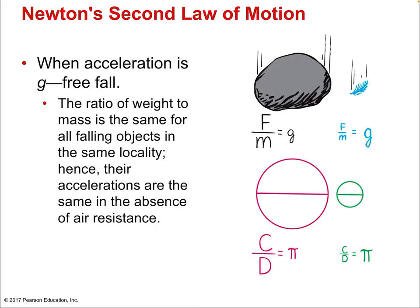When acceleration is g, the ratio of weight to mass is the same for all falling objects in the same locality — hence their accelerations are the same in the absence of air resistance. This is similar to the idea of equal ratios, like the ratio of circumference C to diameter D giving pi. The ratio of weight to mass is always the same; it gives us g = 9.8, which is unique to Earth. There are trillions of other planets that behave differently.